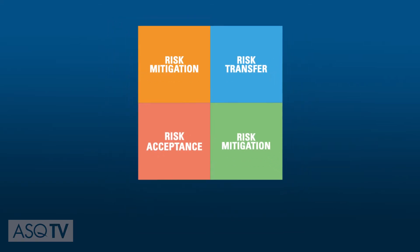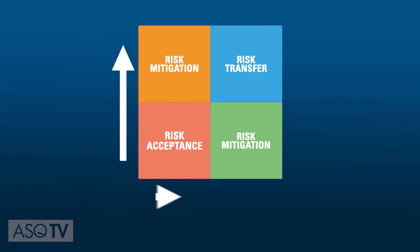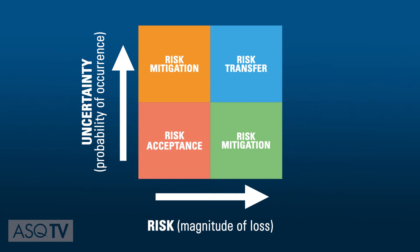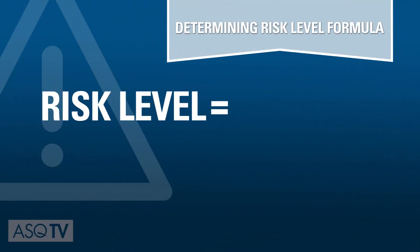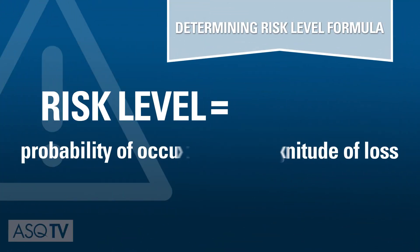When choosing a response to risk, an organization must balance the cost of risk response and risk level. Resources used to mitigate risk should be less than the consequences of doing nothing. In fact, there's a simple formula to help determine risk level: it's the probability of occurrence times the magnitude of loss.